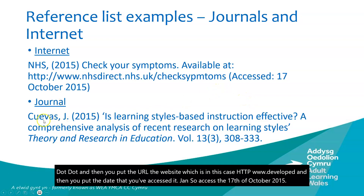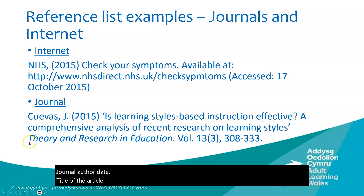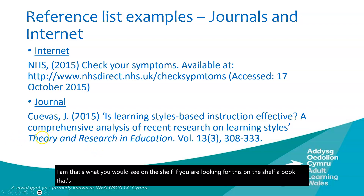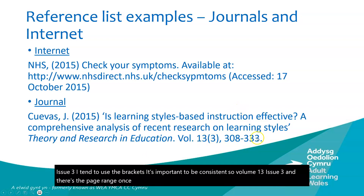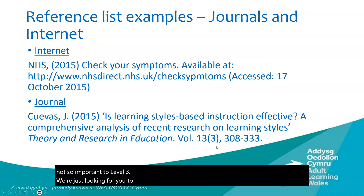For a journal: author, date, title of the article, then the journal name in italics — that's what you'd see on the spine on a shelf. Then volume number — for example volume 13 — issue number, for example issue 3, and the page range. The exact layout will depend on your organisation. At level three we're looking for you to develop Harvard referencing ready for further study, and also to avoid plagiarism.